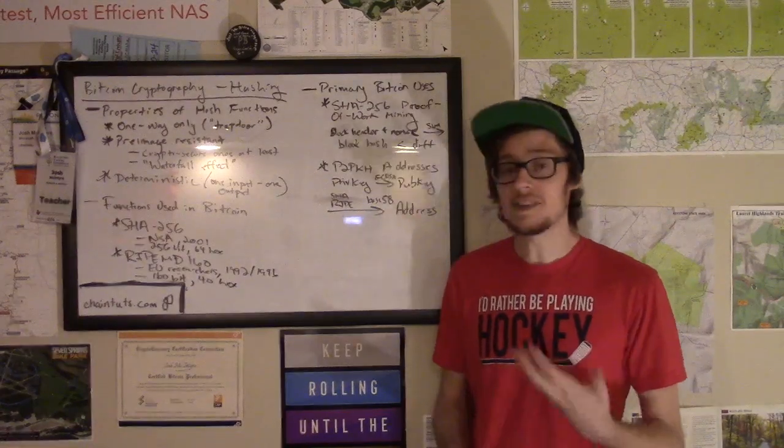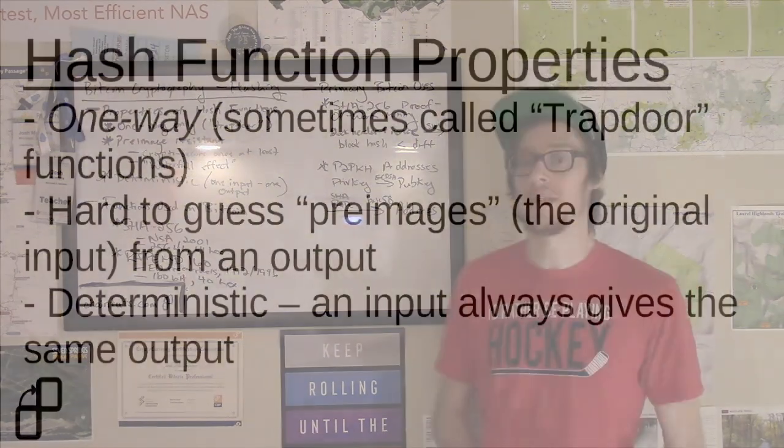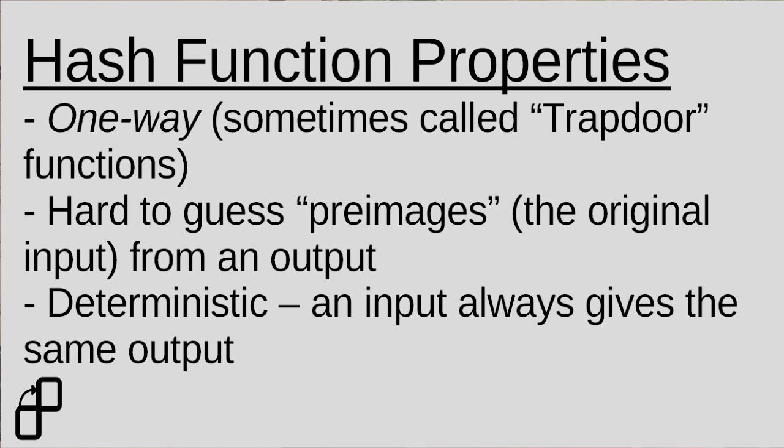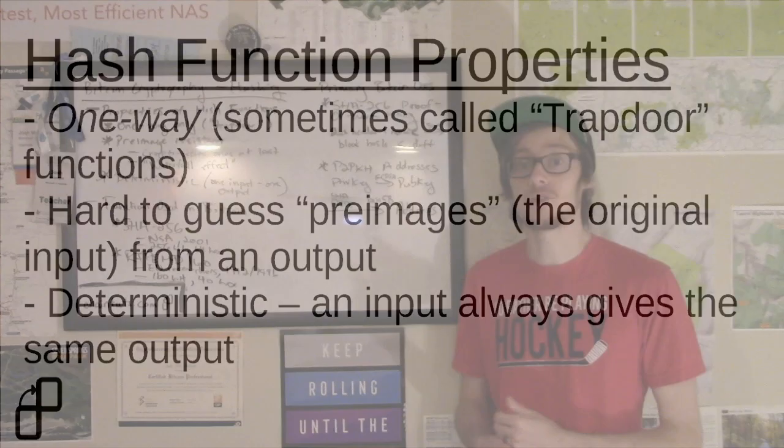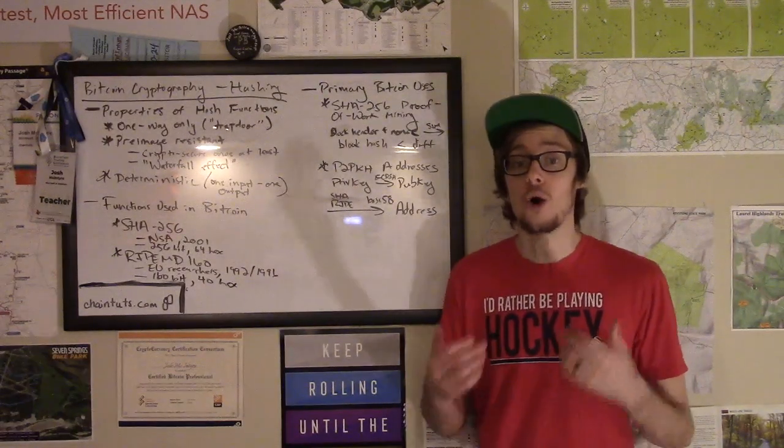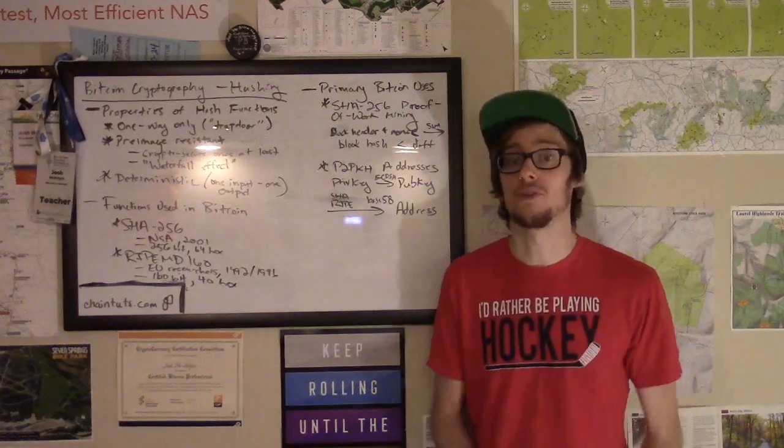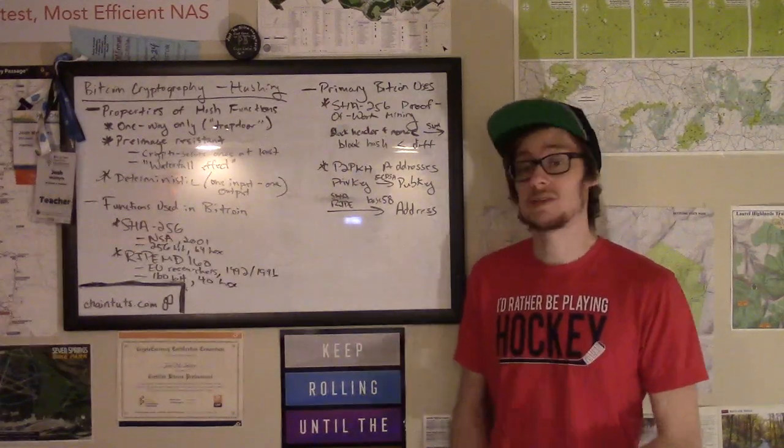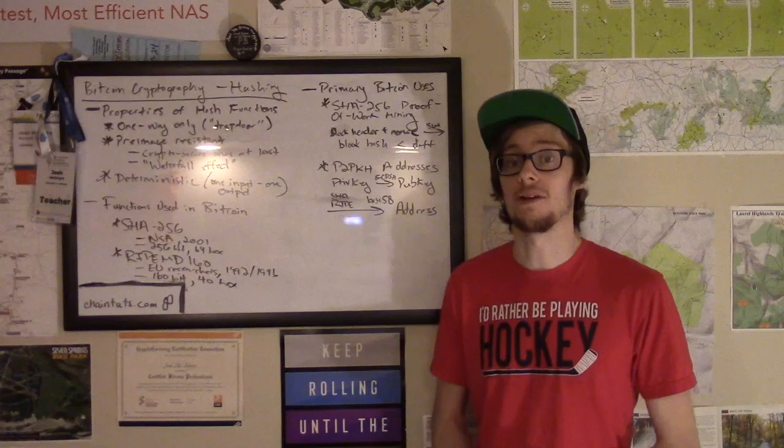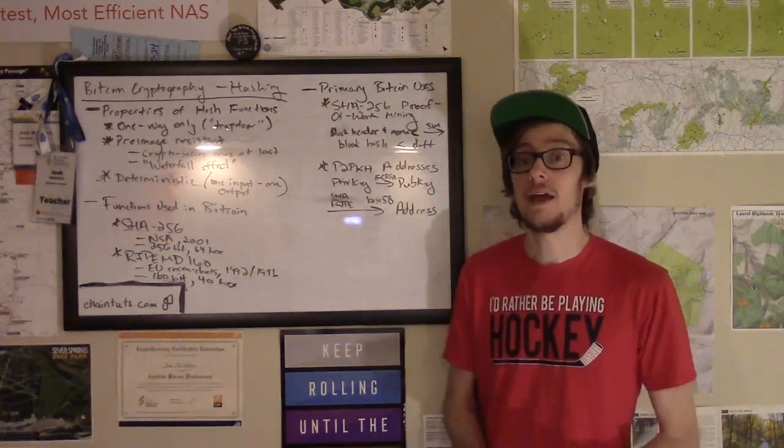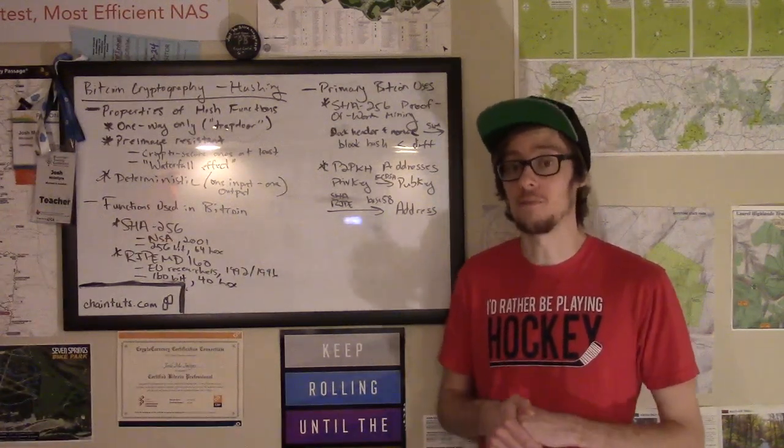And finally, these hash functions are deterministic. Meaning that for one input, you always get the same predictable output. If you go on any computer that has a properly implemented version of SHA-256, it doesn't matter what the programming language is or what the architecture is. If it's done right, you'll always get the same output for a particular input. And as we're going to see later, that's a pretty important property for things like proof of work mining and validating blocks on the blockchain.